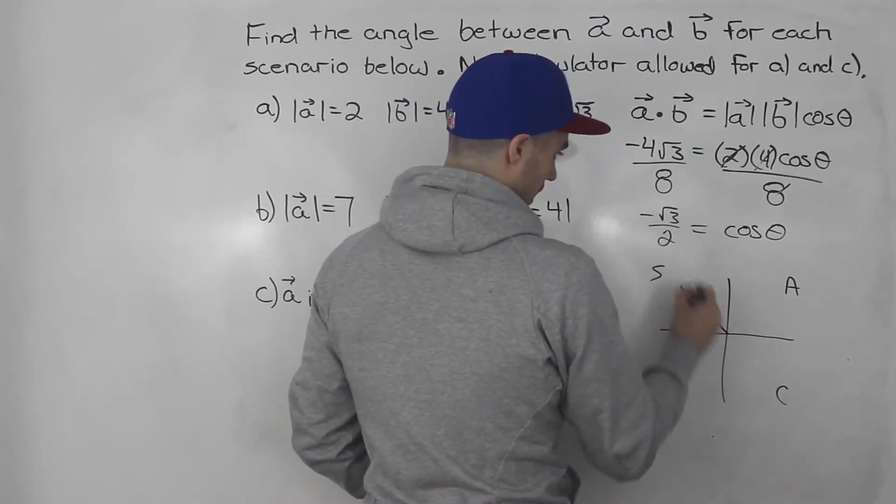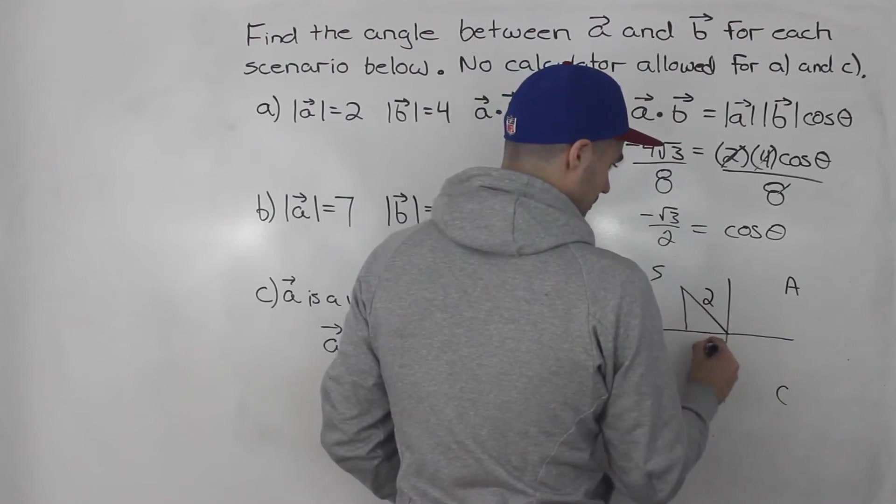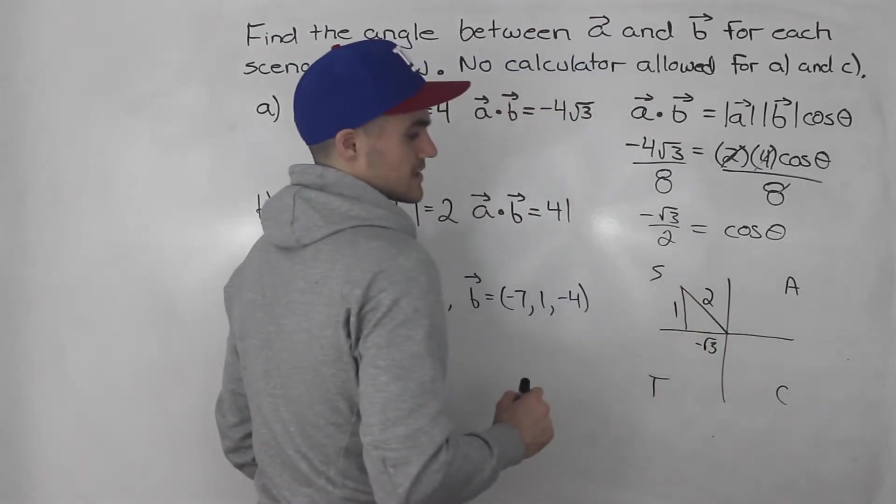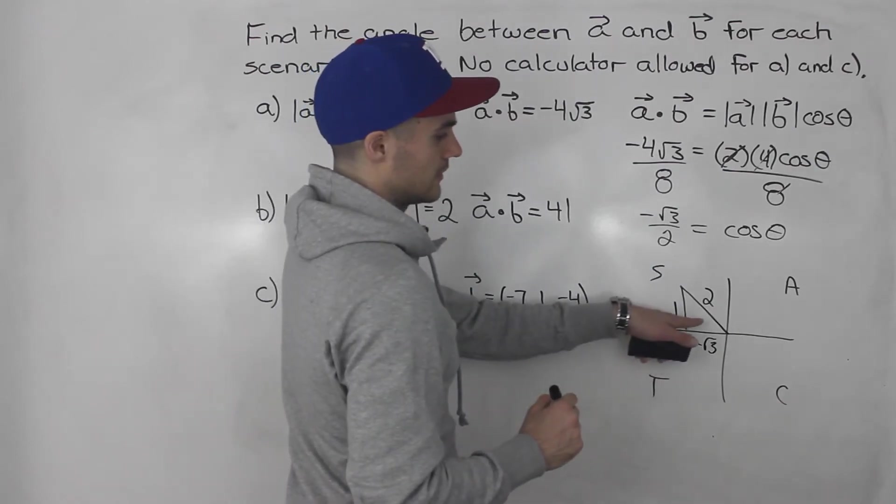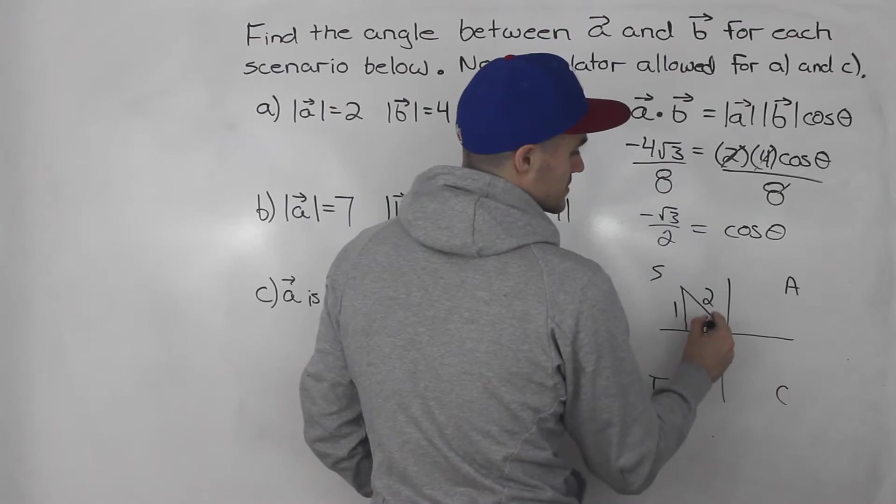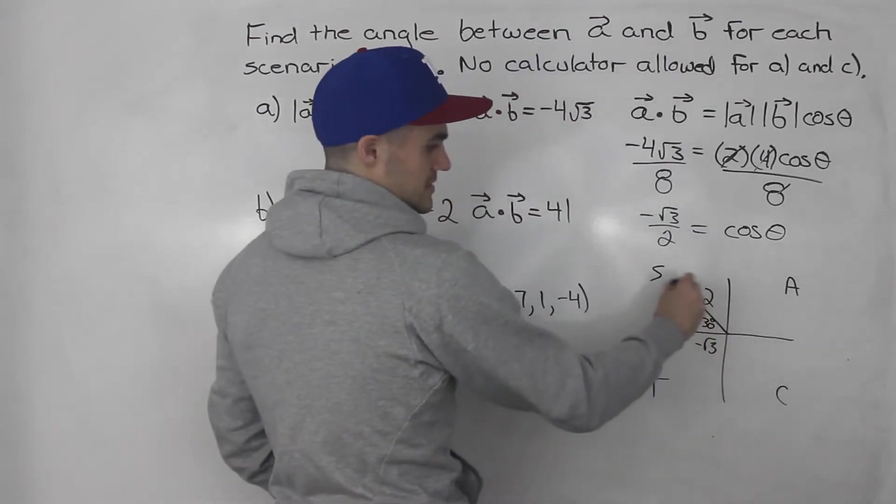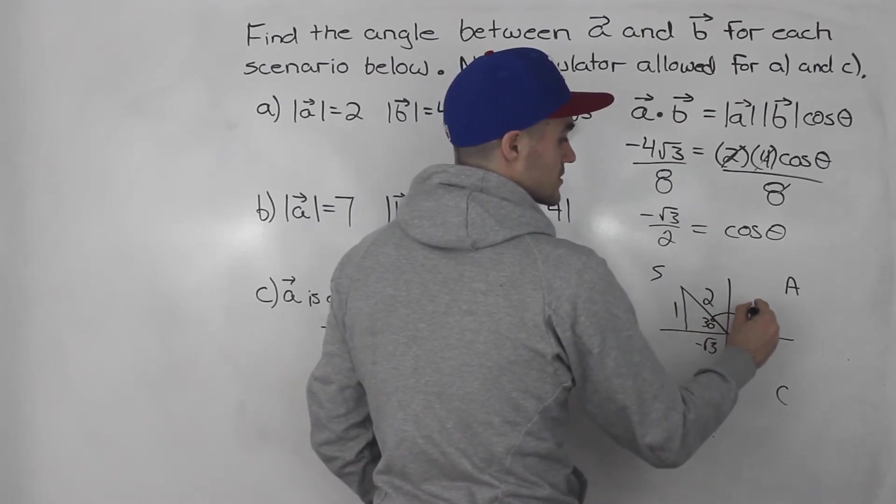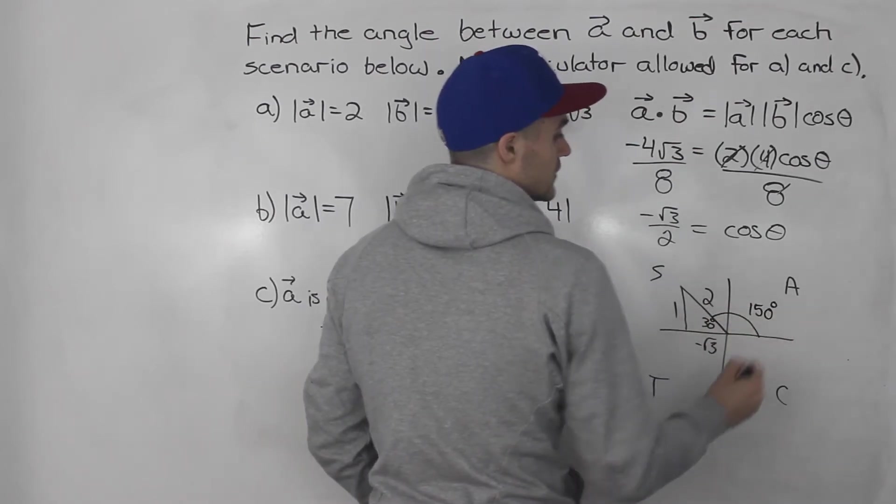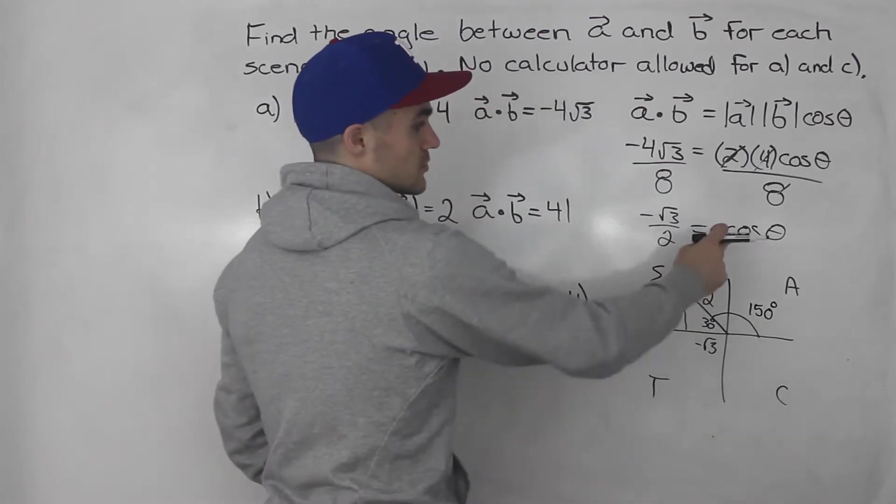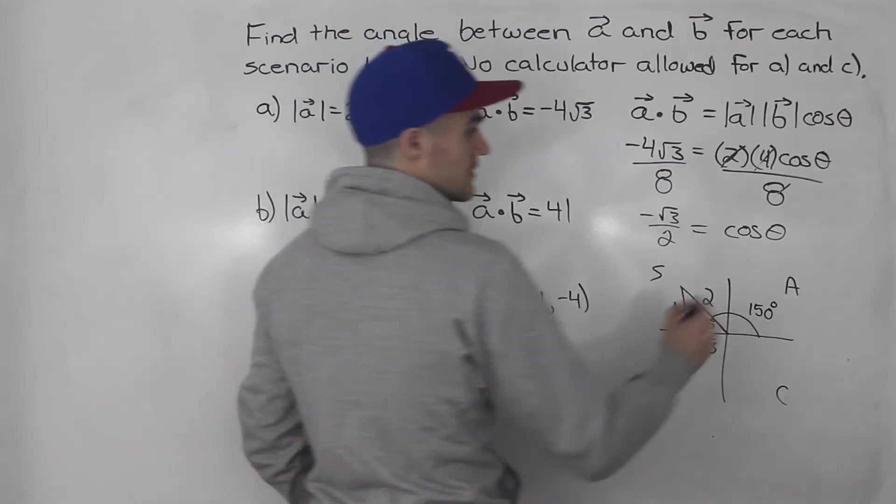Now cos is adjacent over hypotenuse. Hypotenuse, adjacent, that's the opposite side. And then what's the reference angle going to be? It's going to be 30 degrees. This is a special triangle. This is 30 degrees, so that means that this angle here is going to be 150, 180 degrees minus that reference angle of 30. So basically the answer to this is 150 degrees.